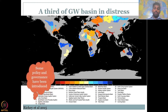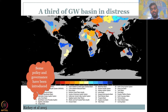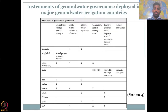By the introduction of some policy and governance, we can quickly look across the world where they have introduced these policies and how they differ when it comes to groundwater management. Here you can look at where the major aquifers are and where major depletions are happening, and compare that with the instruments of groundwater governance deployed in these irrigation countries.